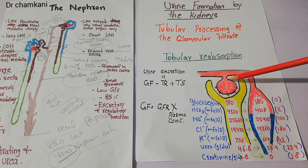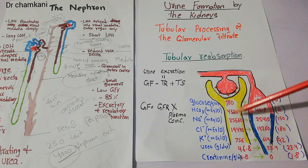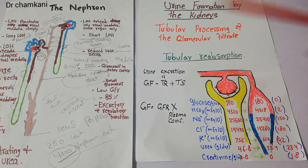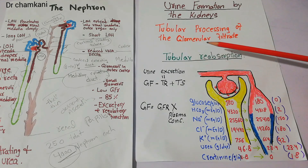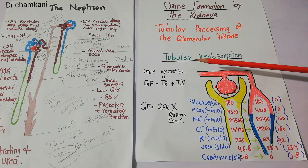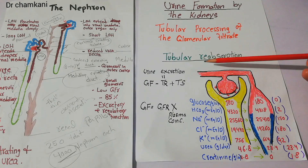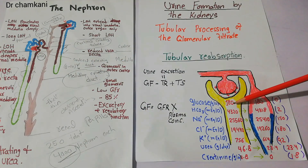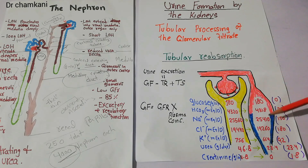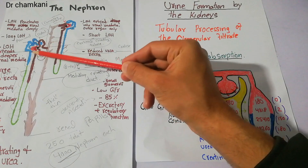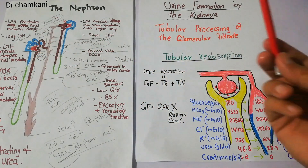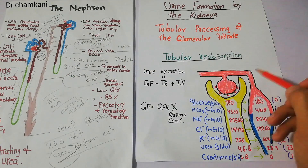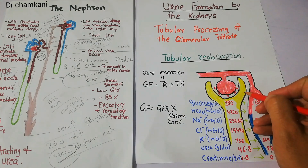Blood enters the glomerular capillaries, filtration starts into the Bowman's capsule, and the filtrate then moves into the nephron tubule. Once filtration has occurred, the next step is tubular reabsorption. Tubular reabsorption is as important as tubular filtration. Substances which enter the proximal tubule get reabsorbed into the peritubular capillaries, which surround the proximal tubule, the loop of Henle, and the distal tubule. Additionally, some substances are secreted from the peritubular capillaries back into the tubules.